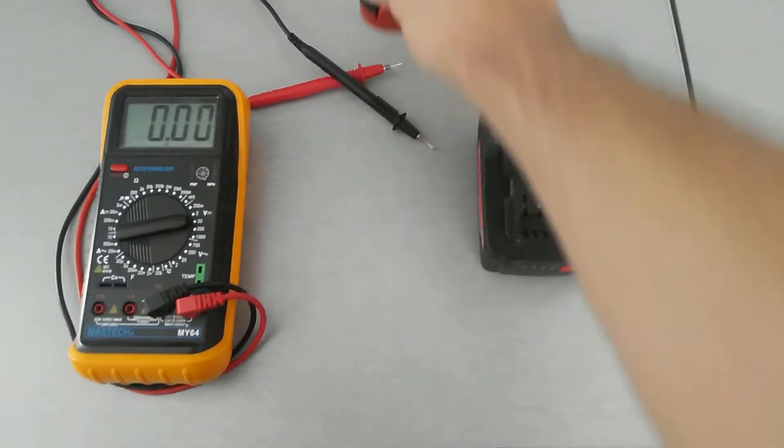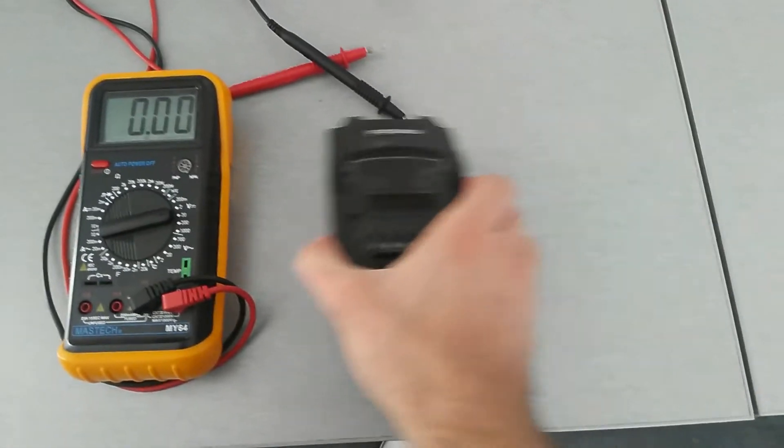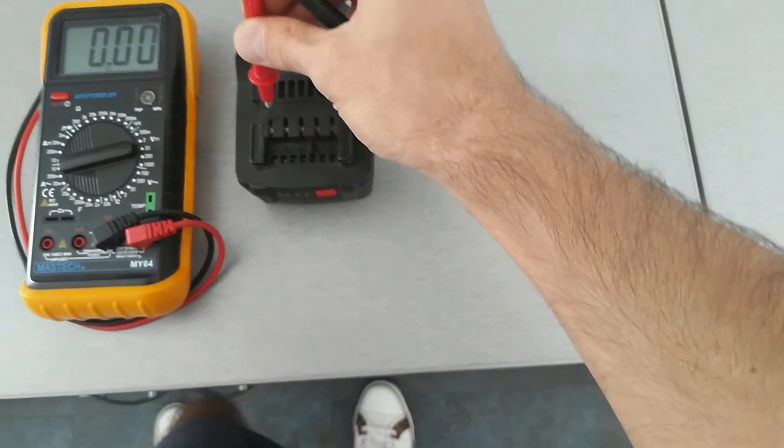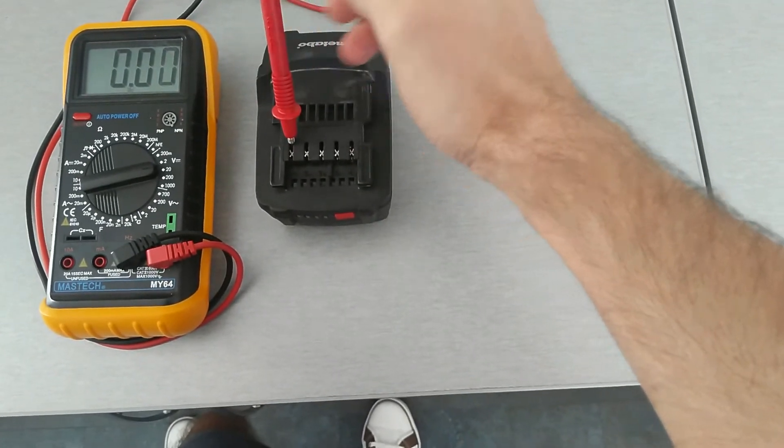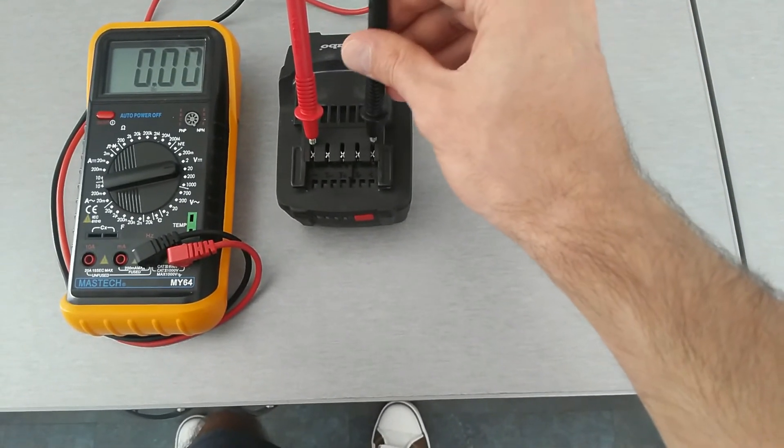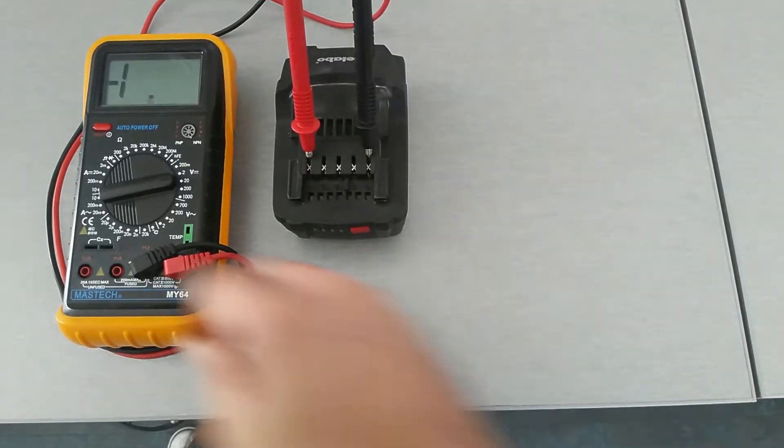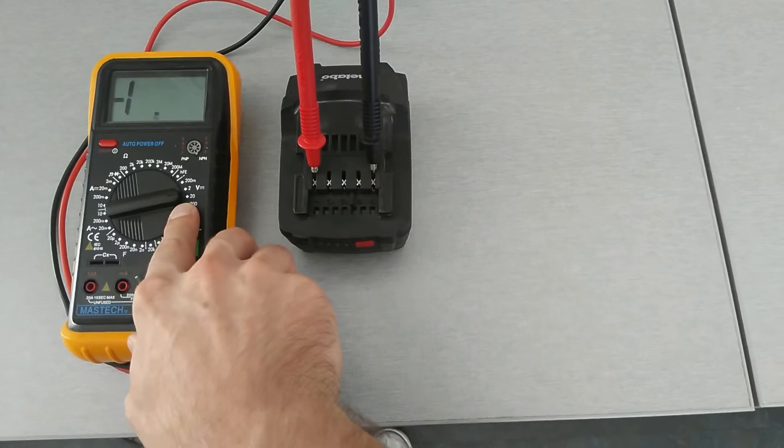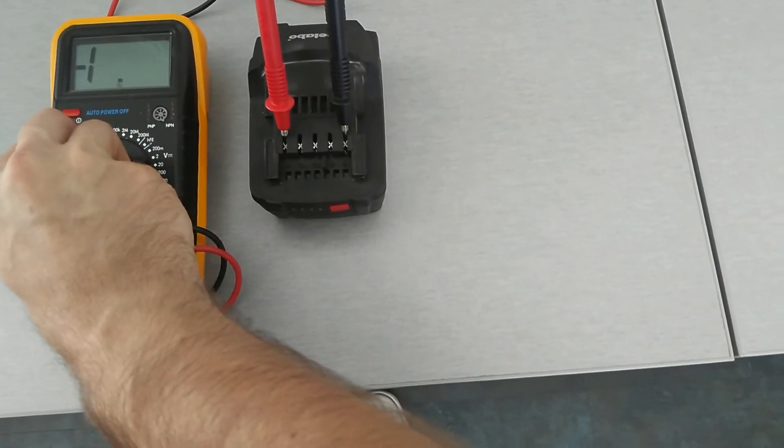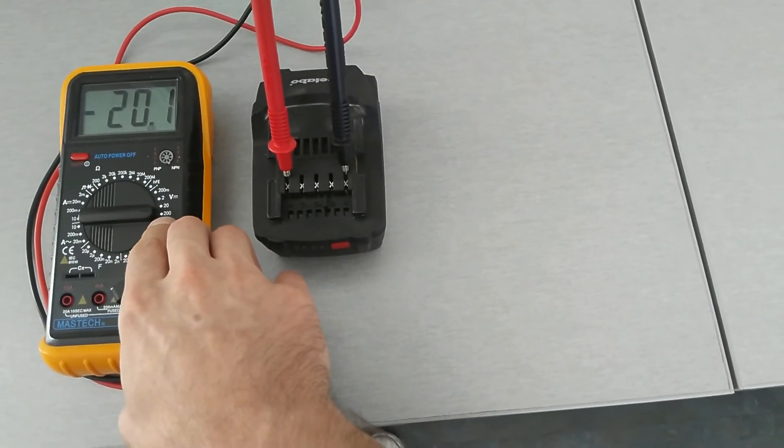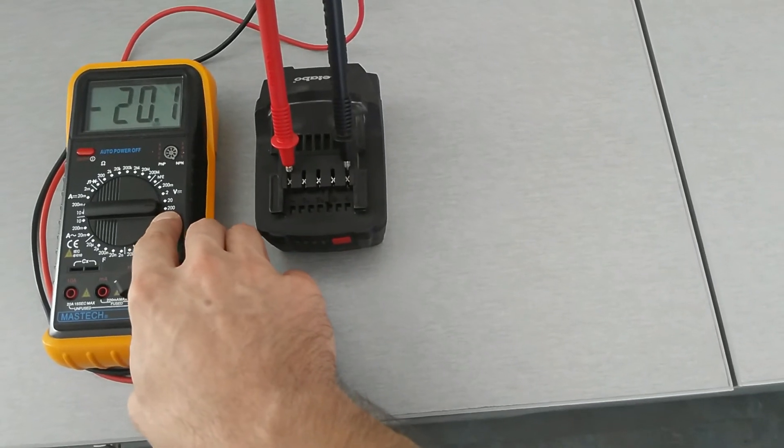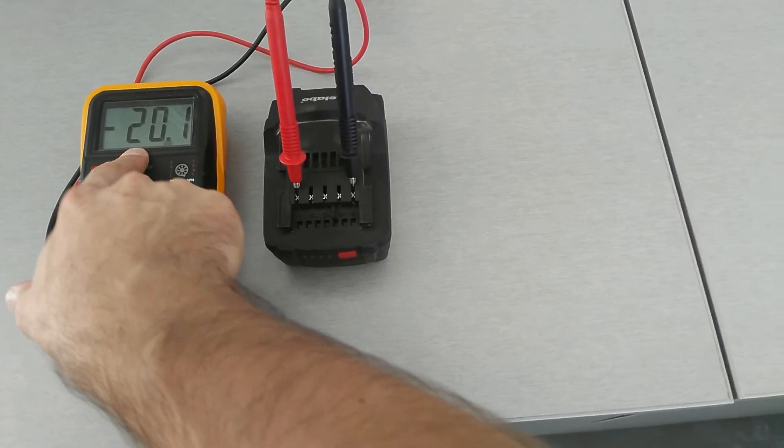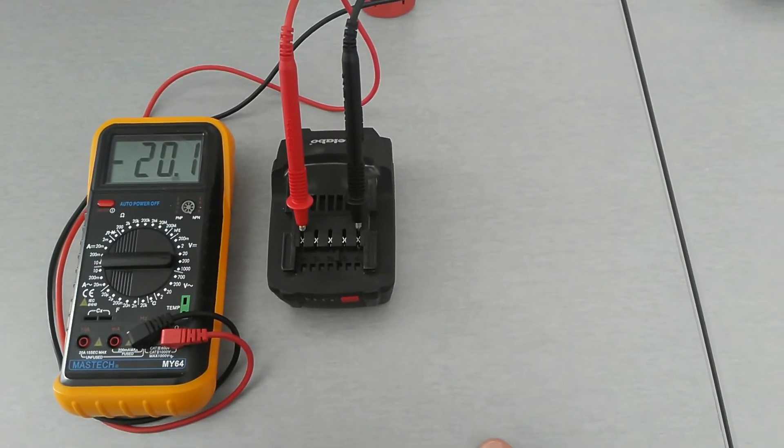Now let's check the other battery. We put one terminal to the minus and one terminal to the plus. Here the voltage is bigger than 20 volts, so we have to change the setting to 200 volts. And here we have 20.1 volts.